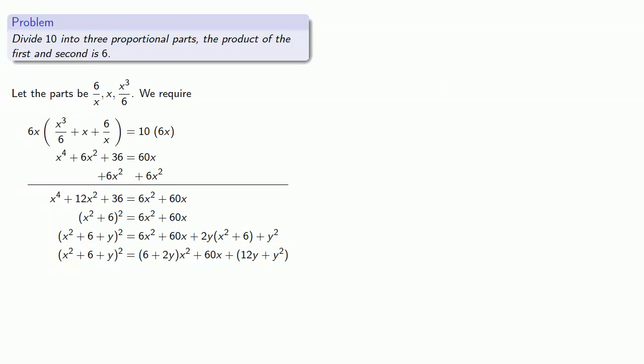If we want our right-hand side to be a perfect square, the square of half the coefficient of x, that's 60, has to be the product of the other two coefficients, 6 plus 2y times 12y plus y squared. We can expand, and that gives us a cubic equation.